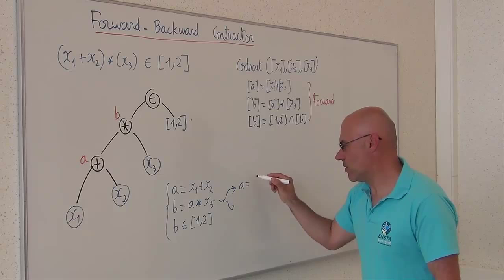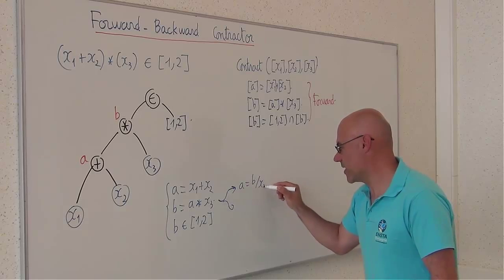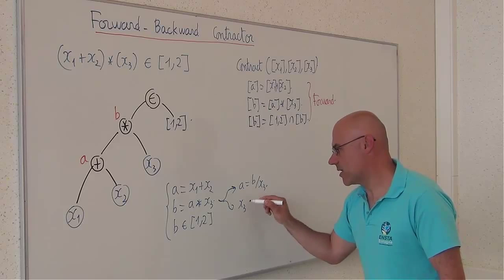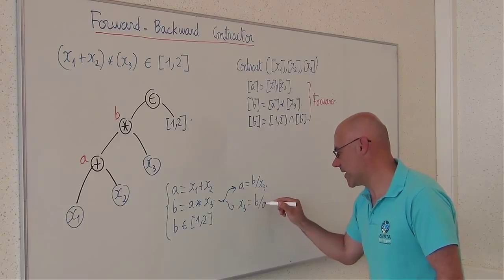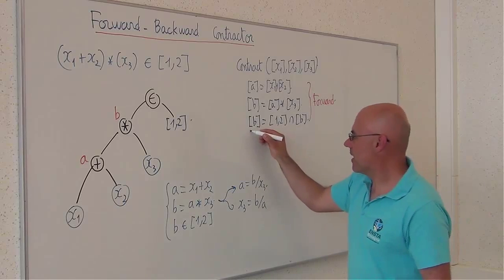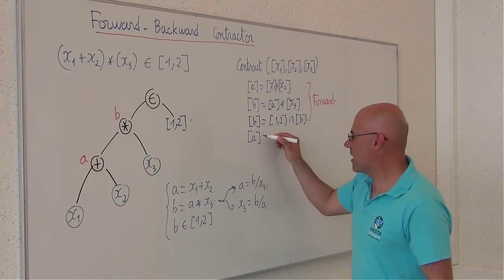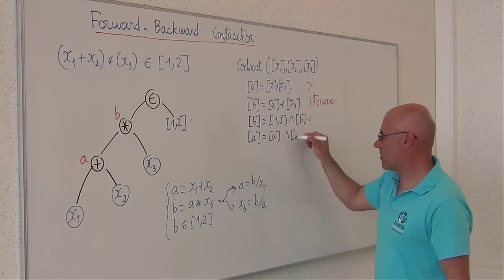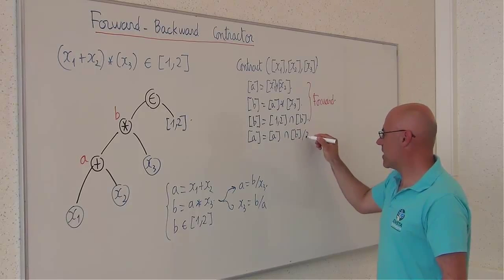a equal to b divided by x3. And here, x3 equal to b divided by a. So, the corresponding contraction will be written here: a equal to a intersected with b divided by x3.